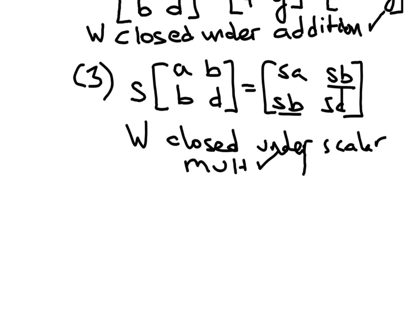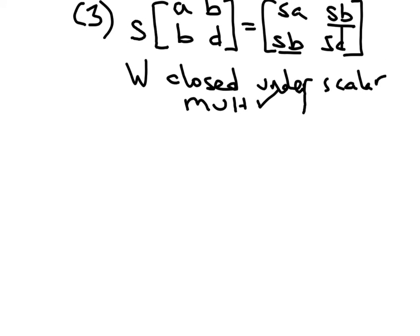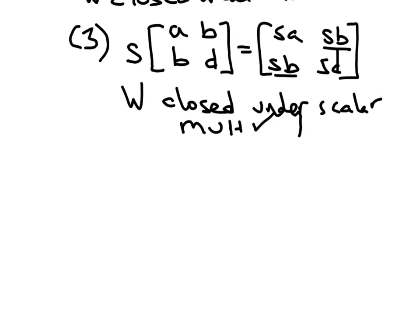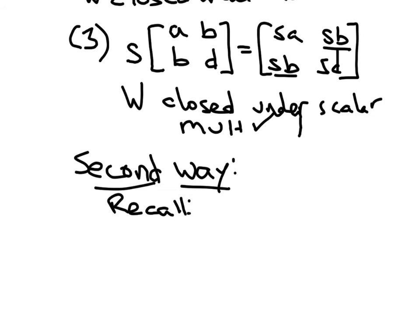Now there is a second way to do this. So we went through one method of proving that W is a subspace of M 2 by 2. There is a second way to prove this. And the trick here is to recall that there was a theorem that said that the span of any collection of vectors in a vector space, however many vectors we want here,